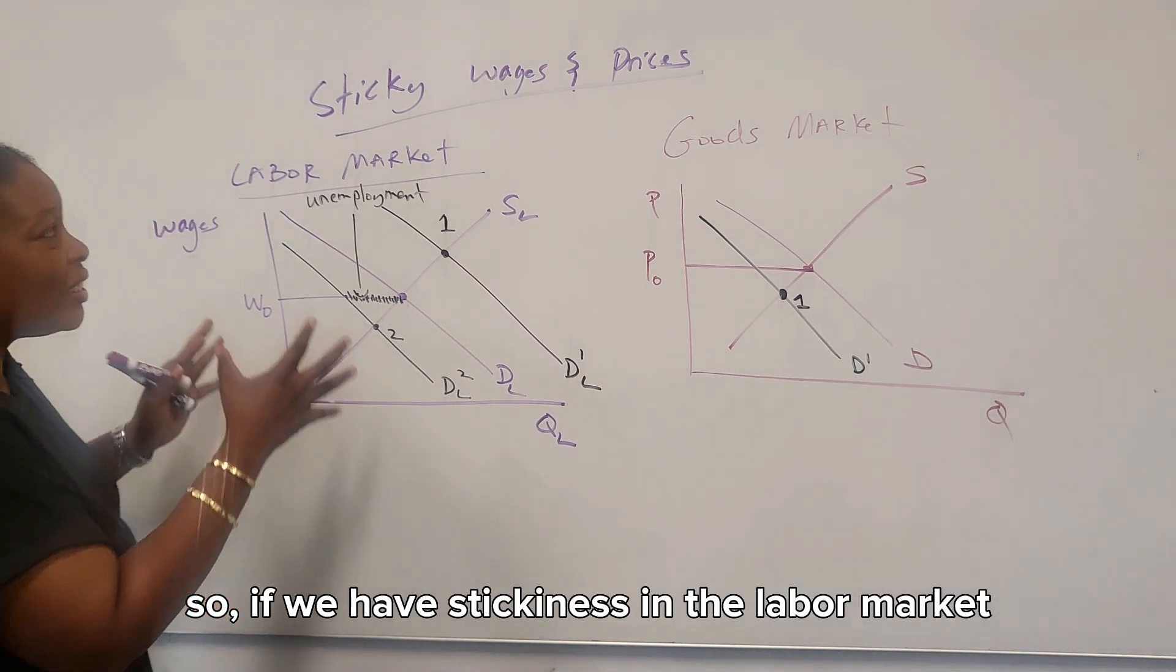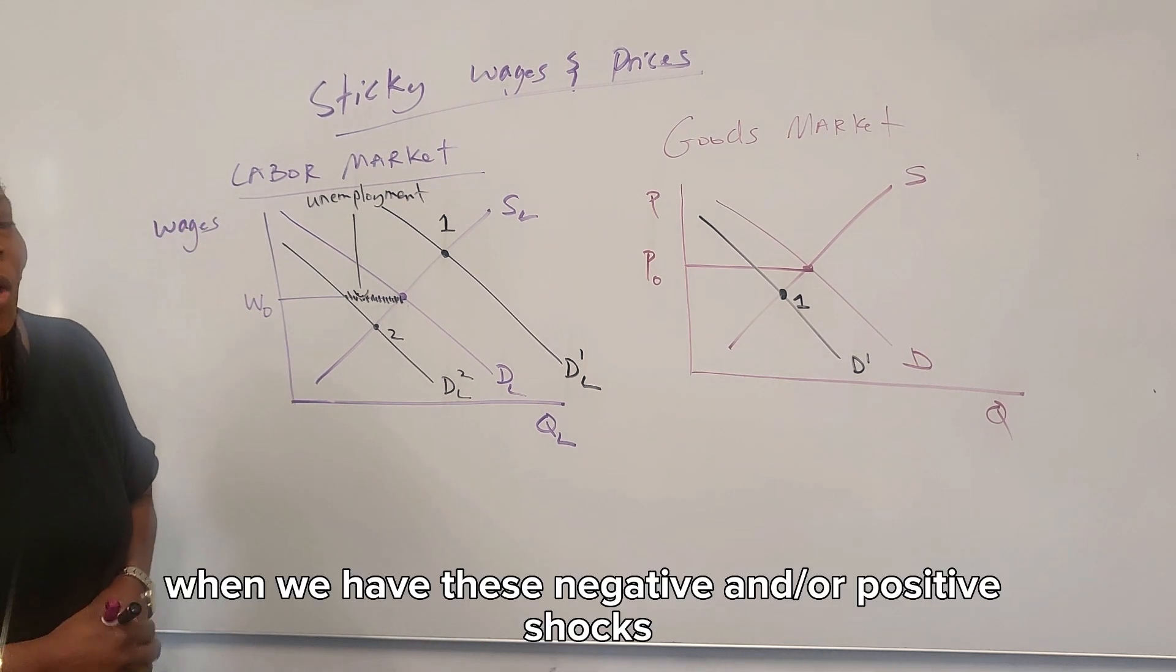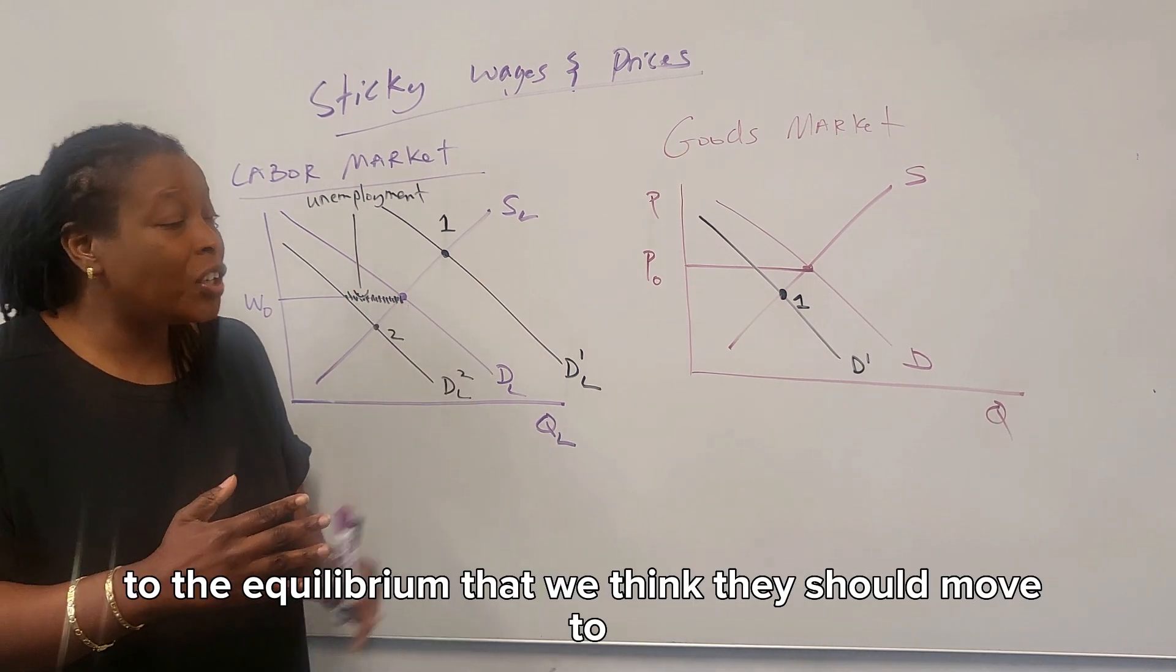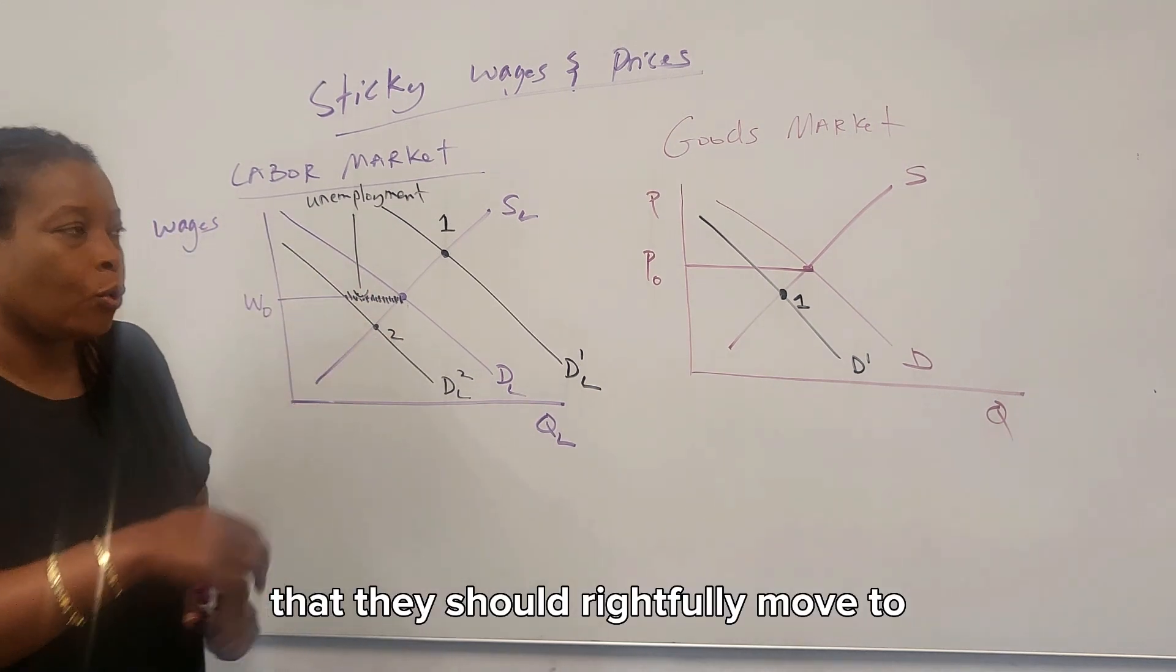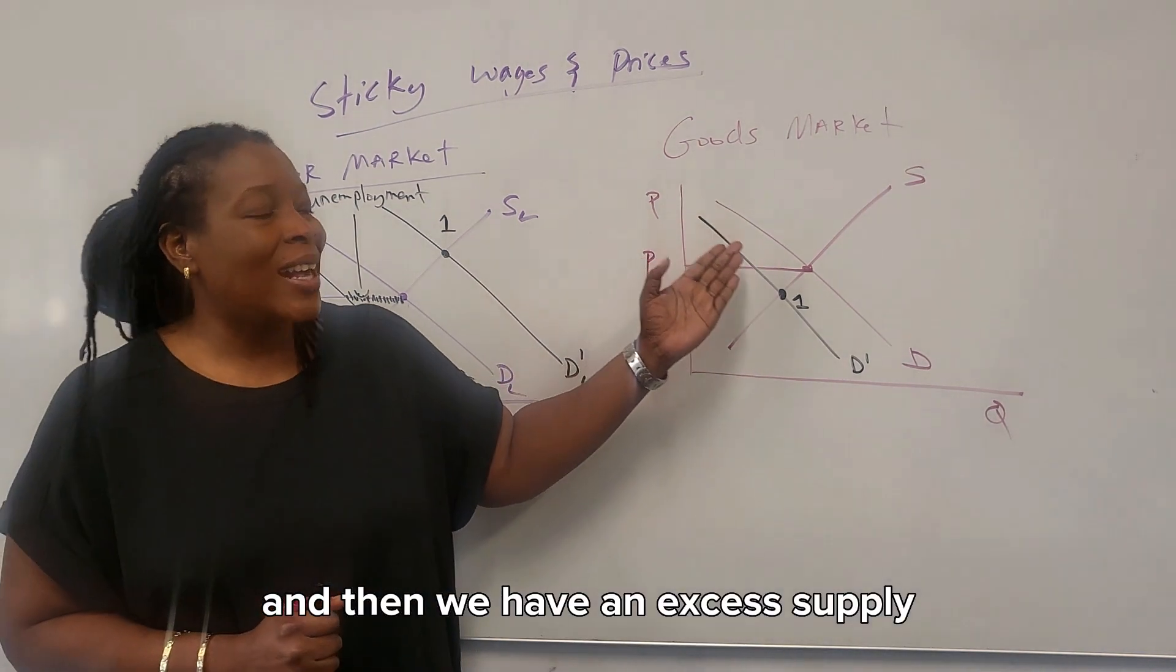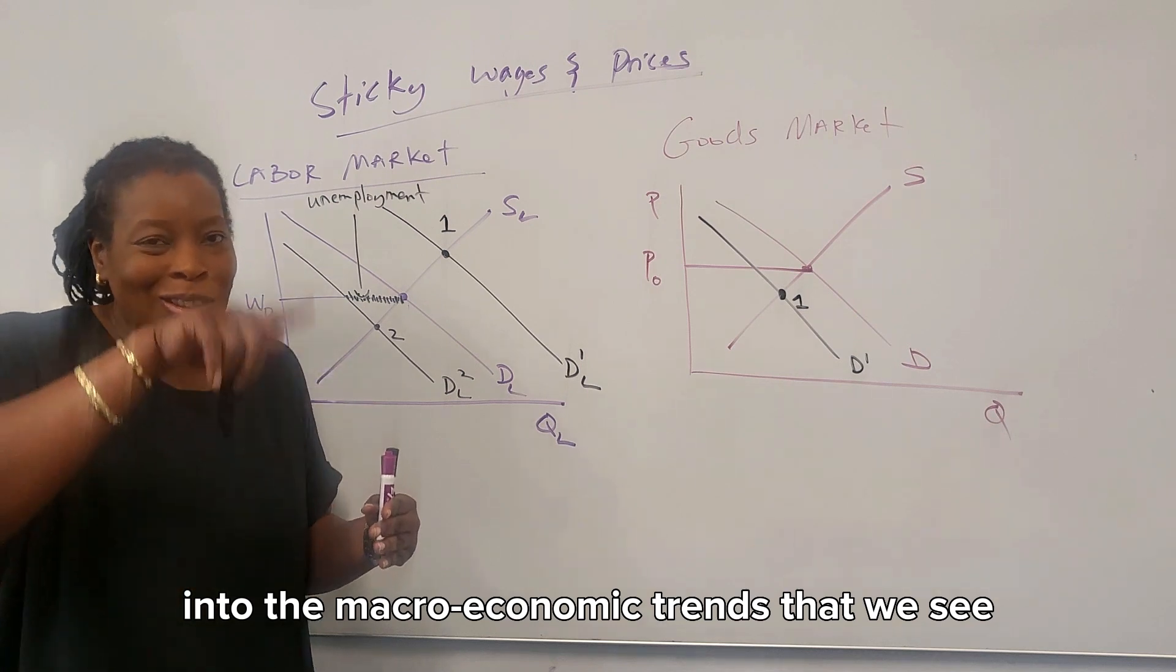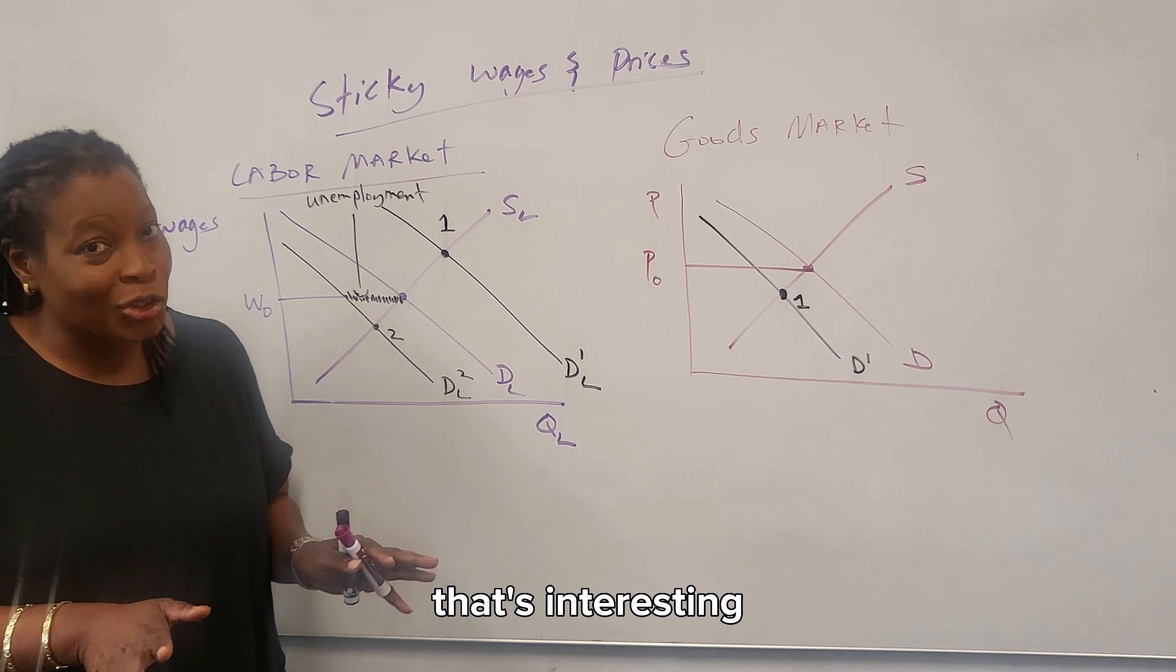So if we have stickiness in the labor market and in the goods market, when we have these negative and or positive shocks, if the wages and the prices are not moving to the equilibrium that we think they should move to or that they should rightfully move to, then we end up with unemployment in the labor market. And then we have an excess supply or surplus in the goods market. And these spill over into the macroeconomic trends that we see. That's interesting, I hope.